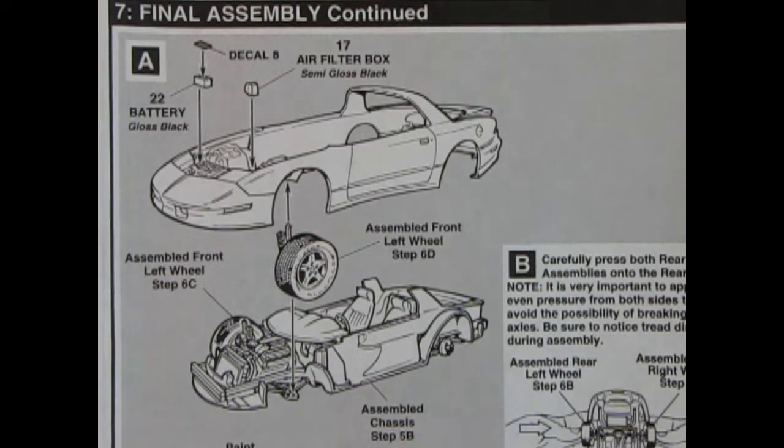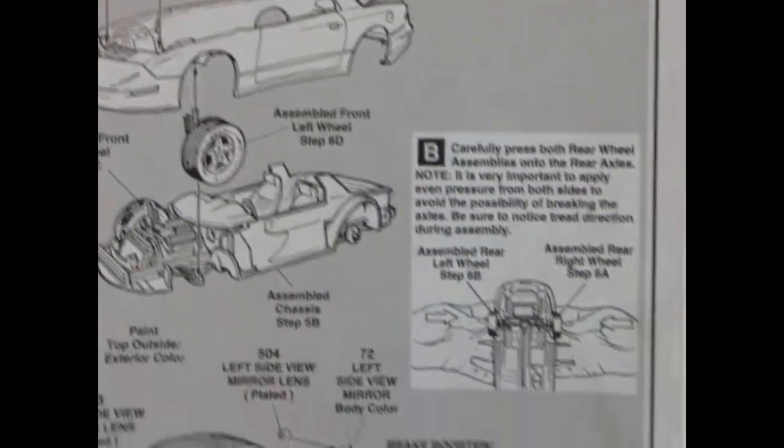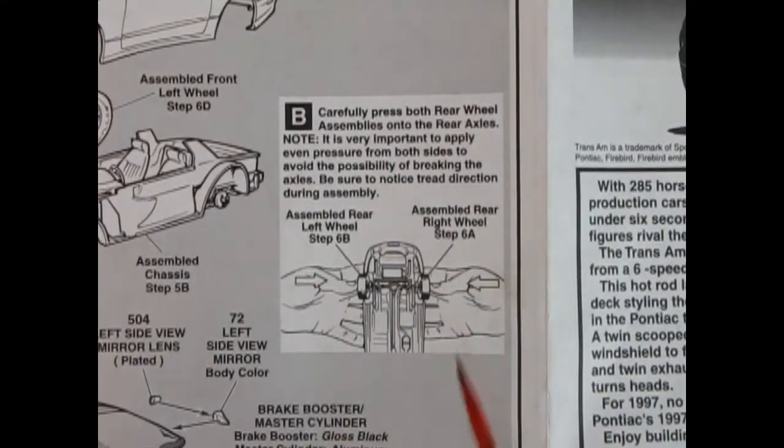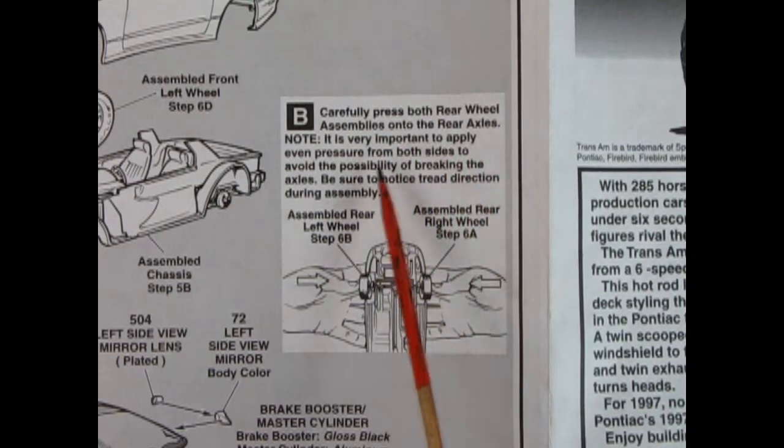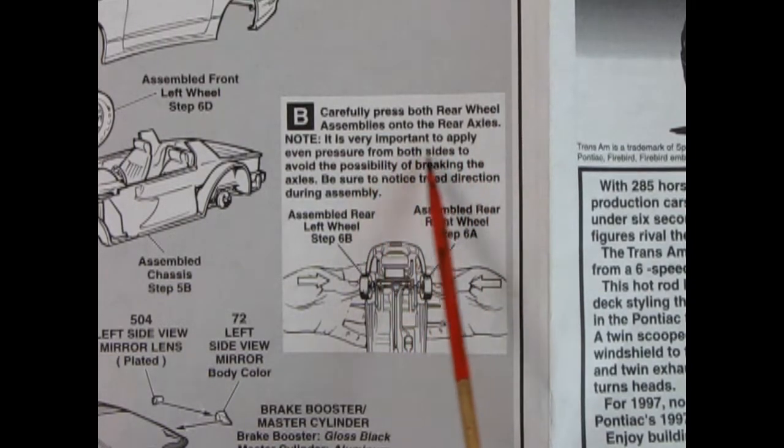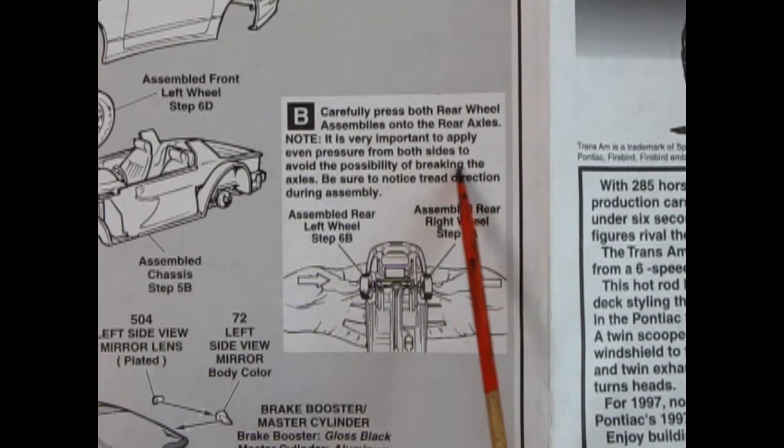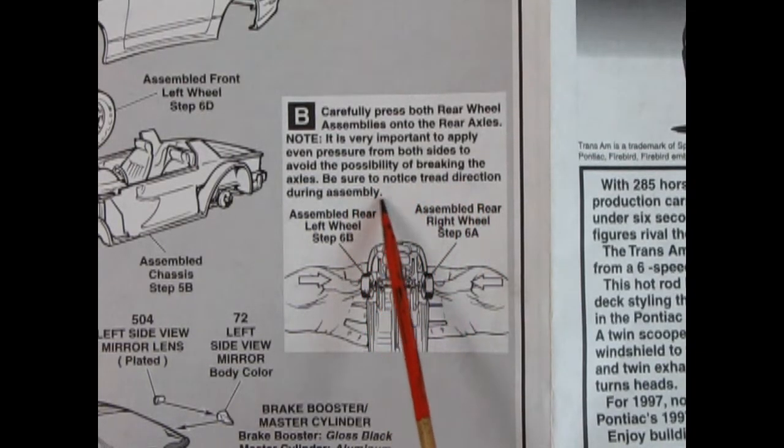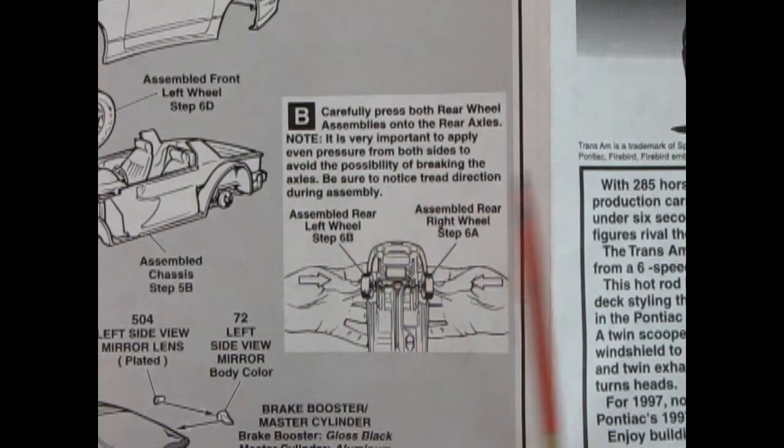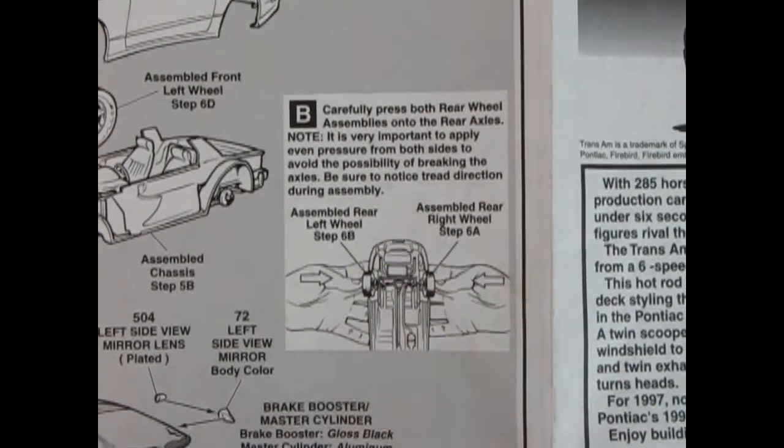Panel B says carefully press both rear wheel assemblies onto the rear axles. Note, it is very important to apply even pressure from both sides to avoid the possibility of breaking the axles. Be sure to notice tread direction during assembly. And there they have it right there.